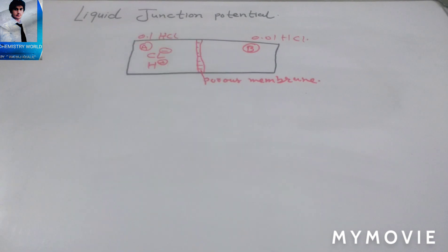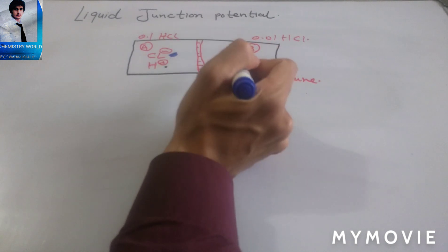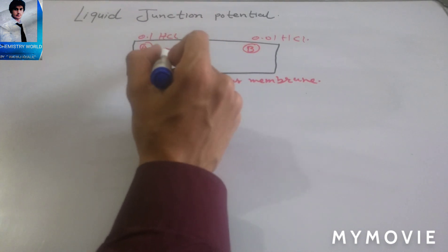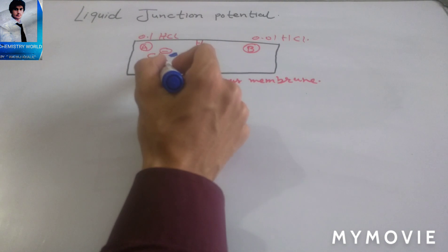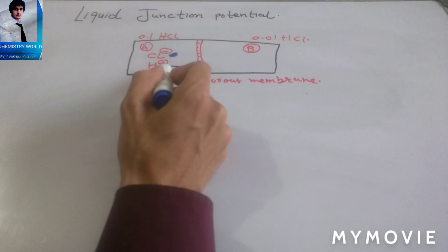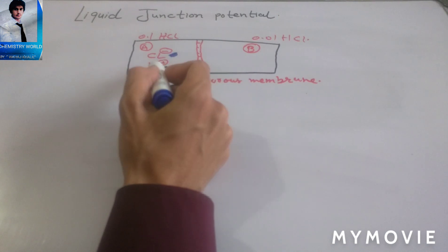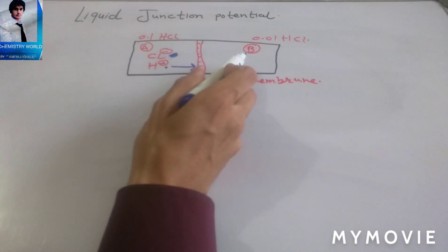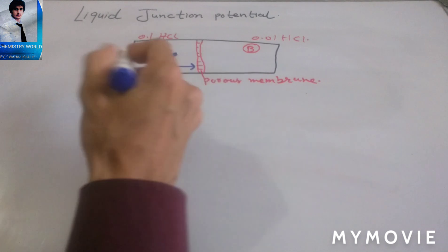We already know that in a liquid medium the electrolyte separates into ions — H⁺ and Cl⁻ ions. The size of H⁺ is small compared to Cl⁻. From the process of diffusion, we know that the movement of ions is from higher concentration to lower concentration. Because of its small size, H⁺ has faster mobility than Cl⁻, so it moves from chamber A to chamber B due to diffusion.